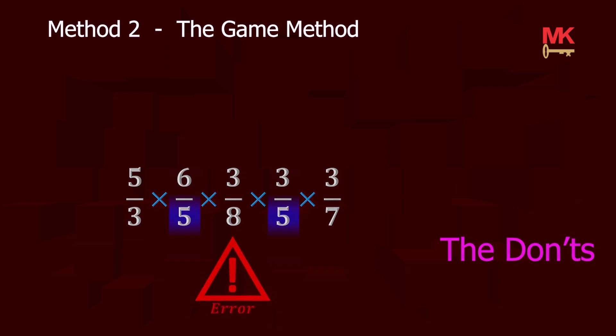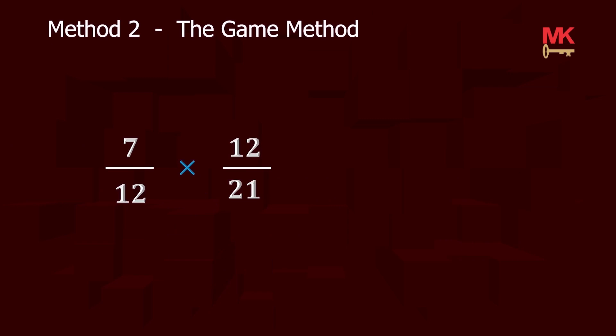Now, we are set to play the game. Let's do this example together. There is a 12 on top and there is a 12 at the bottom. They both cancel out. The common factor between 7 and 21 is 7. 7 goes into itself is 1 and 7 goes into 21 is 3. Therefore, our resulting fraction becomes 1 over 3.